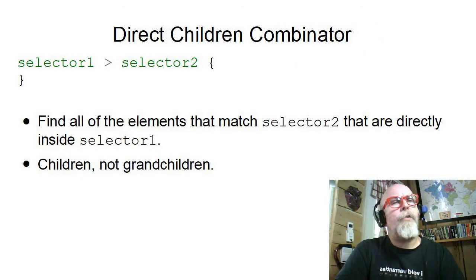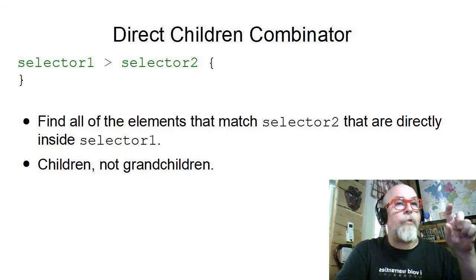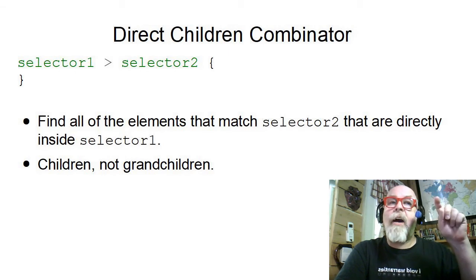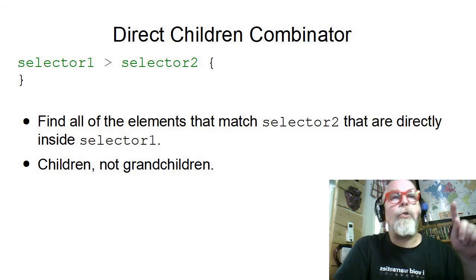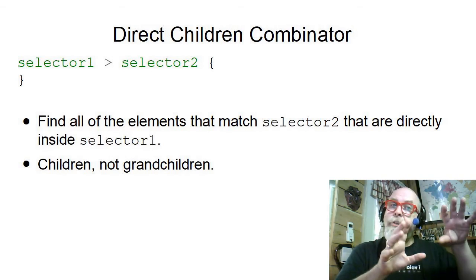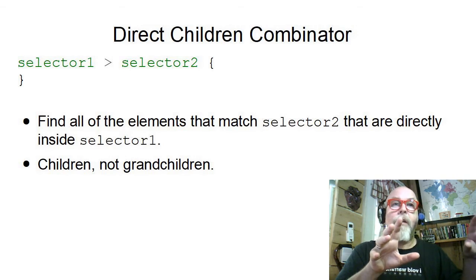The Direct Child Combinator actually just gets those tags that are directly children of the parent tag. By putting the greater than, it says find all of the selector 2s that are directly in, not grandchildren or inside others inside of others like the previous one, like the descendants.